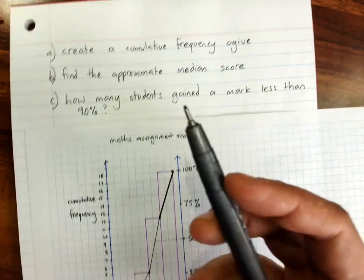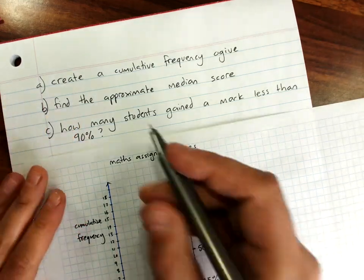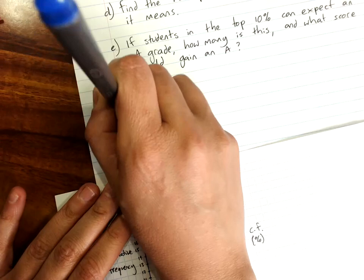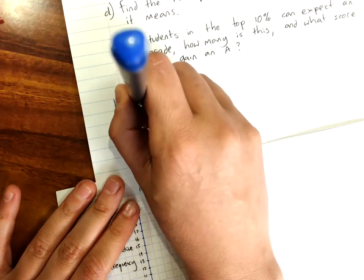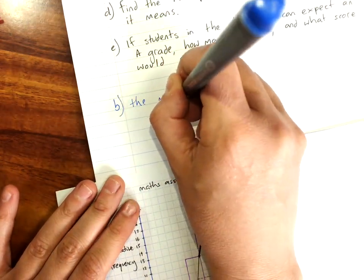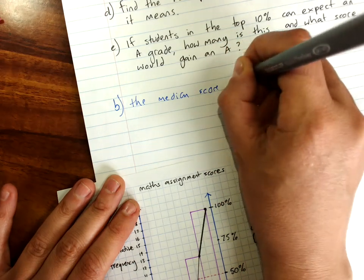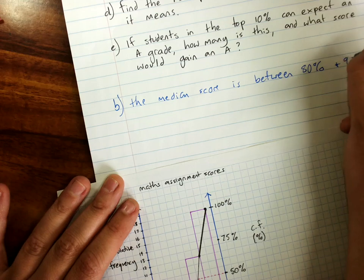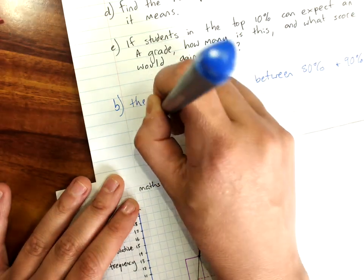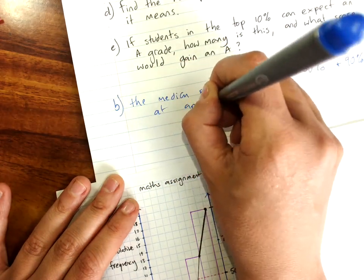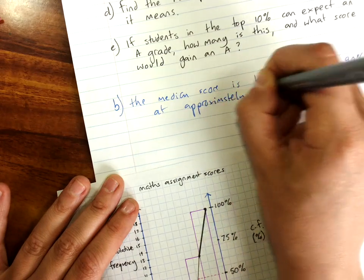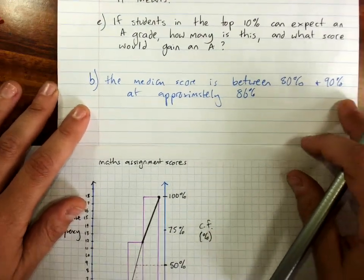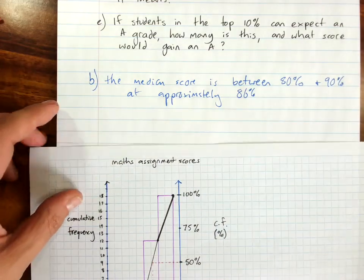So, our response to that, to question B, would be that the median score is between 80% and 90% at approximately 86%. I keep on ending up on an angle. I don't know why. My apologies.